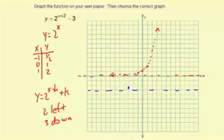The next point to shift is 0, 1 right here. 2 left, 1, 2. And then 3 down, 1, 2, 3. That puts it right there.